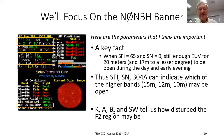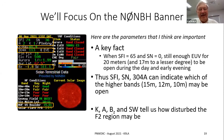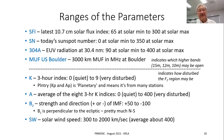Solar flux, sunspot number, and 304A — which is extreme ultraviolet at 304 angstroms, or 30.4 nanometers — can indicate which of the higher bands may be open. The K, A, B_z, and SW parameters tell us how disturbed the F2 region may be. SFI is the latest 10.7 centimeter solar flux; at solar minimum it bottoms out around 65, and at solar max it can get up to 300.